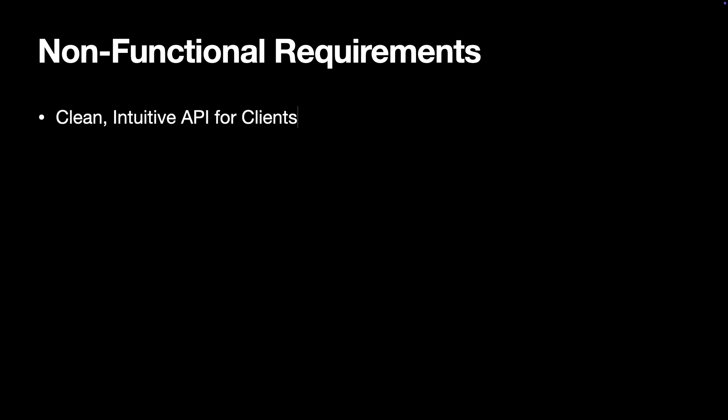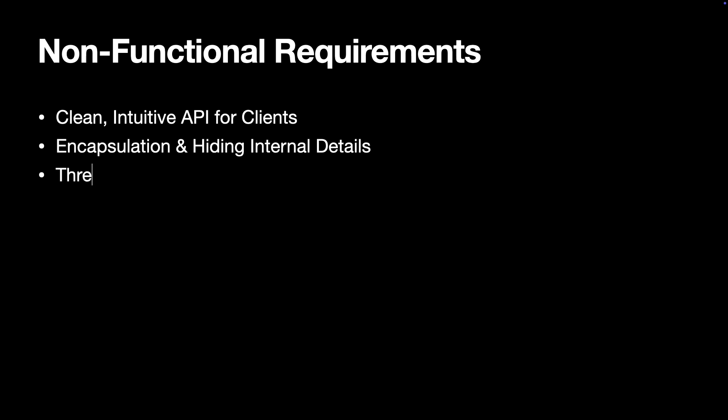First of all, we need clean, intuitive, client-facing interfaces. On iOS, that means using idiomatic Swift with clear naming conventions, leveraging protocols and value types. On Android, use Kotlin idioms and follow Android design patterns, exposing a coroutine-based API with clear class names and extension functions. Next, let's talk about encapsulation. Internal details such as queues, semaphores, workers, and storage must be hidden behind the public API. And the library has to be thread-safe — no race conditions or data corruption.